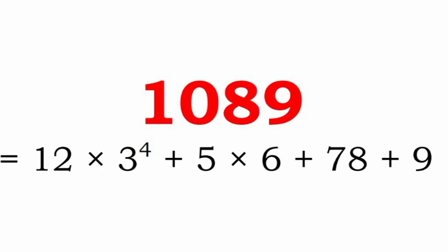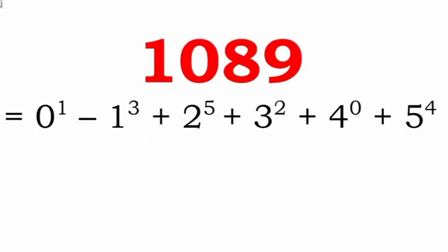This representation is much tougher than the previous one. It uses the digits 0, 1, 2, 3, 4, and 5, with addition and subtraction, and all terms appear as a power. So: 0 to the power of 1 minus 1 cubed plus 2 to the power of 5 plus 3 squared plus 4 to the power of 0 plus 5 to the power of 4.